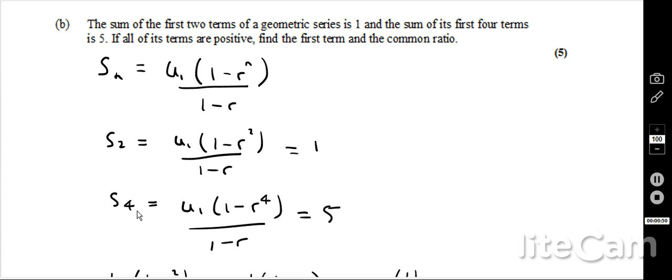And I also can fill in for S4, sum of the first four terms. So that's, again, n is going to be 4 for this. And my answer is going to be 5. So I now have two equations.